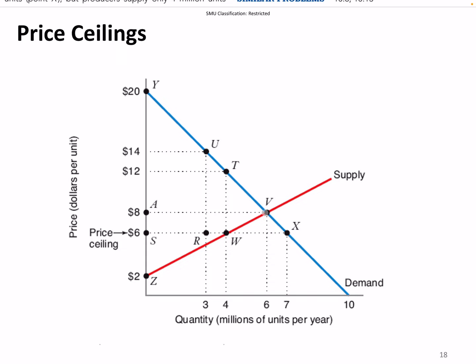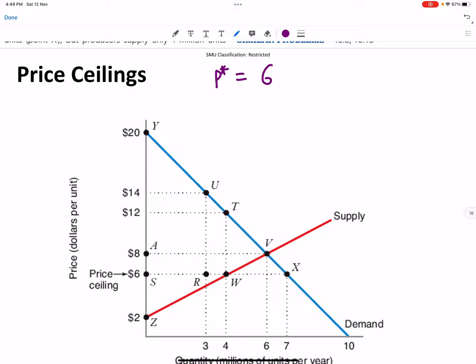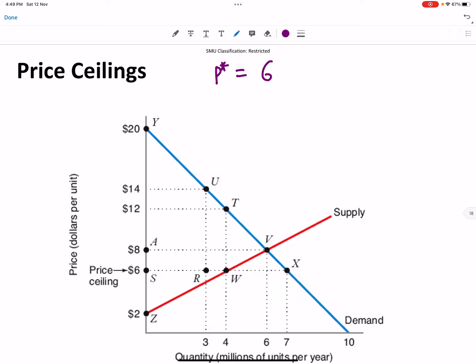With the price ceiling at six dollars, P* is the price ceiling because people would want to pay higher, but the government is limiting the price to six dollars. So P* is the maximum price of six dollars. When the price ceiling is six dollars, suppliers will want to supply only four million instead of six — that's what they want to supply.